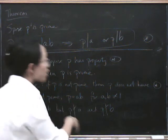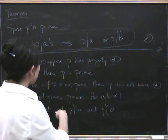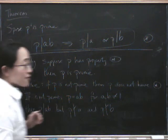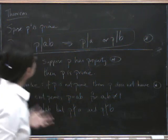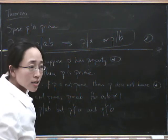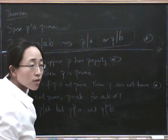So what we've shown is that if p is not prime, it definitely does not have this property, which means that if it does have this property, then it definitely had to be prime. So what we conclude is that this property exactly characterizes the prime numbers.